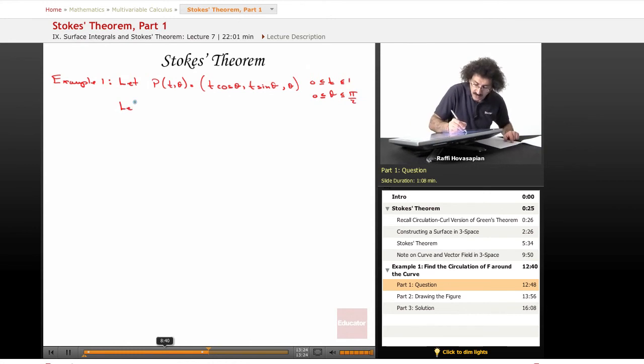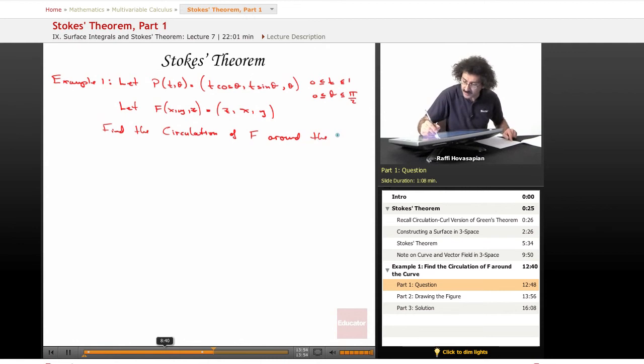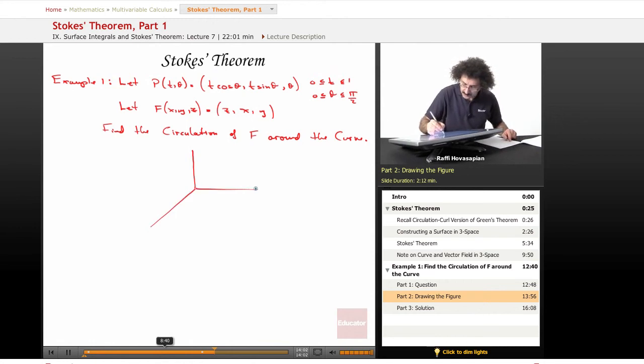And we will let F(x, y, z) equal (z, x, y). Our task is to find the circulation of F around the curve. Let's draw this out and see what it looks like.